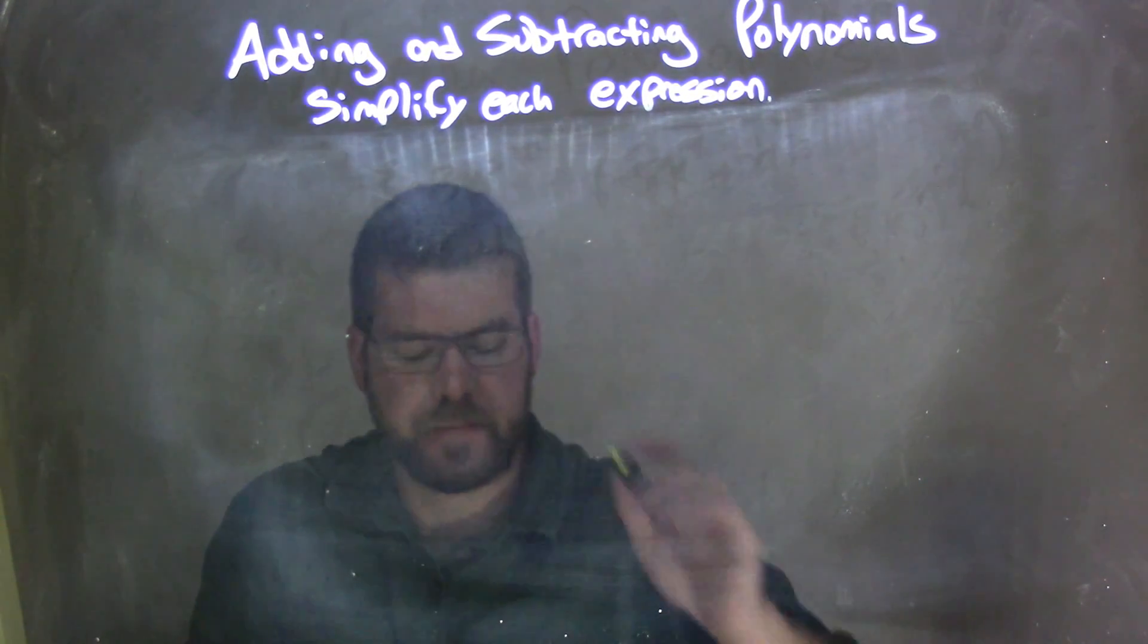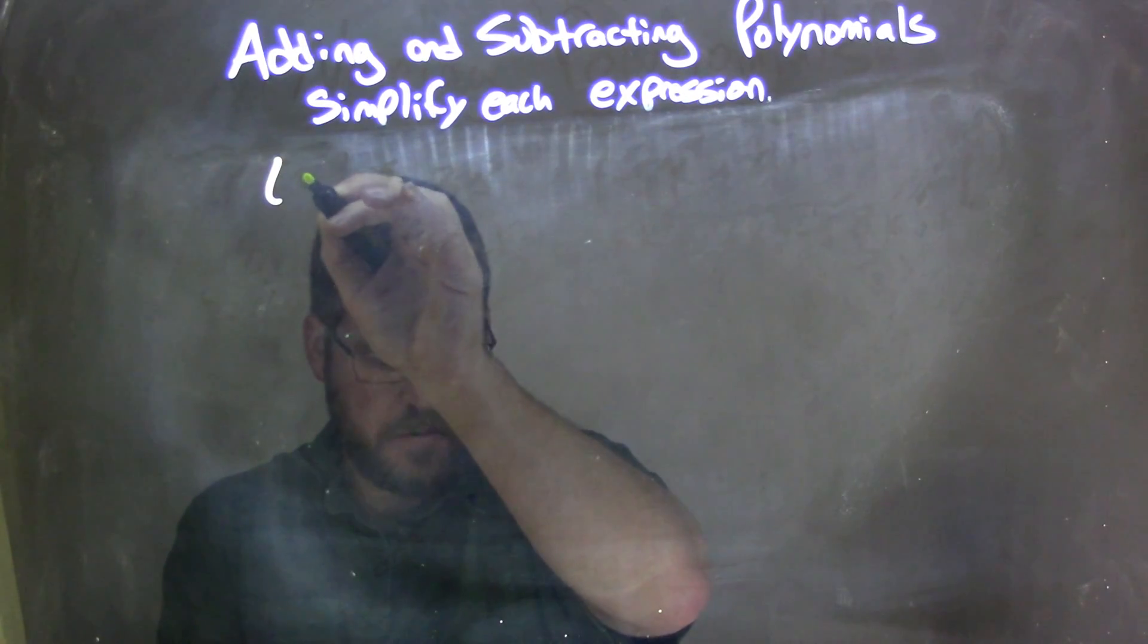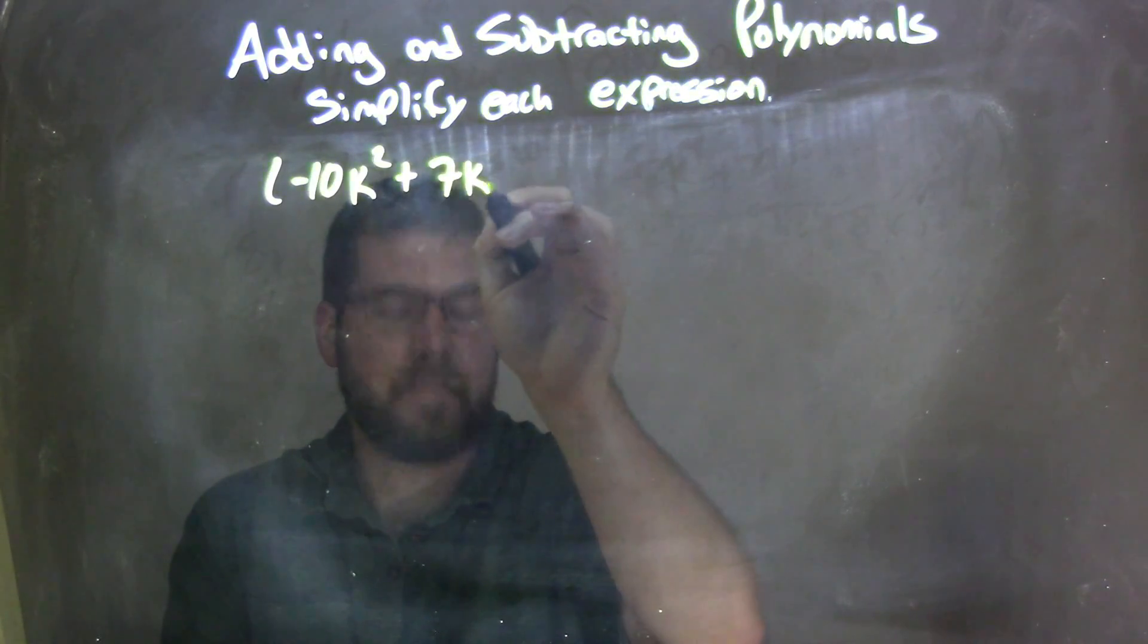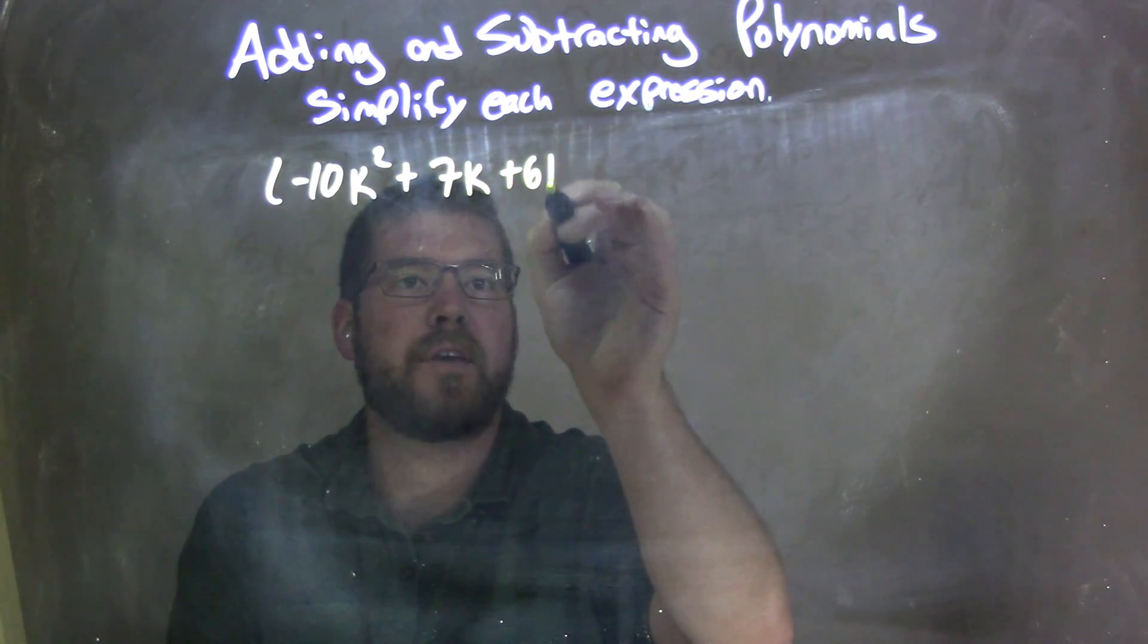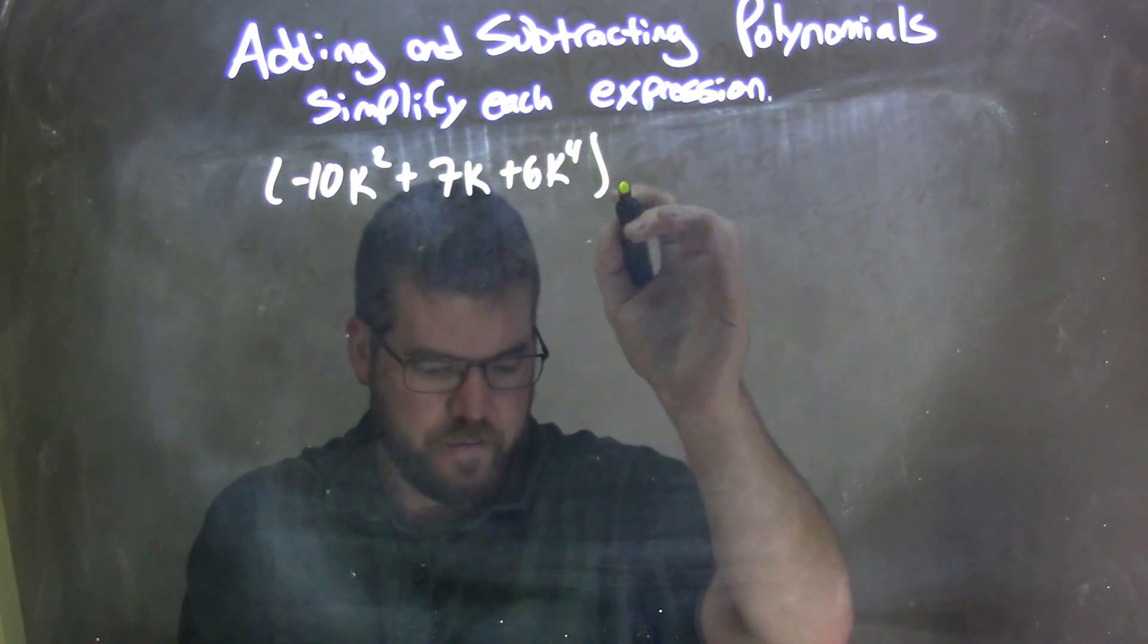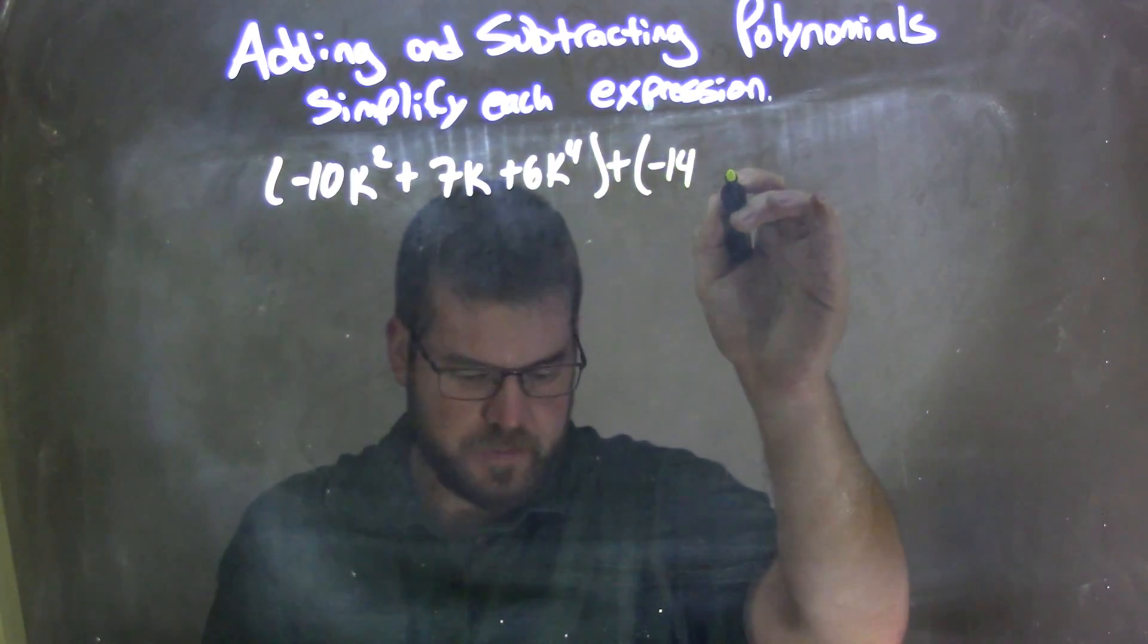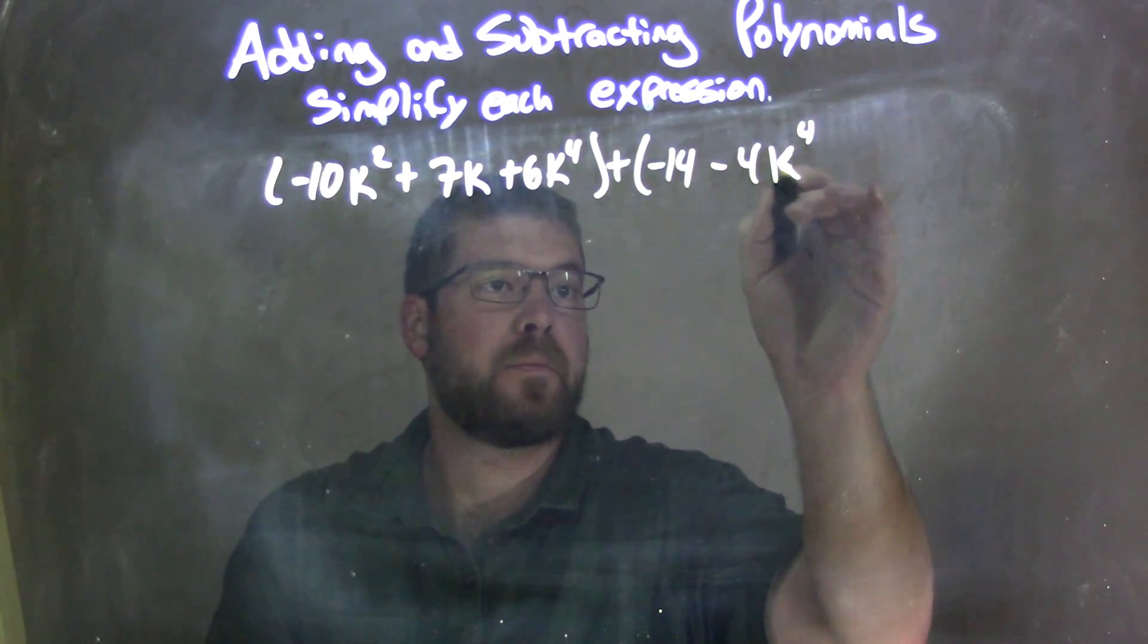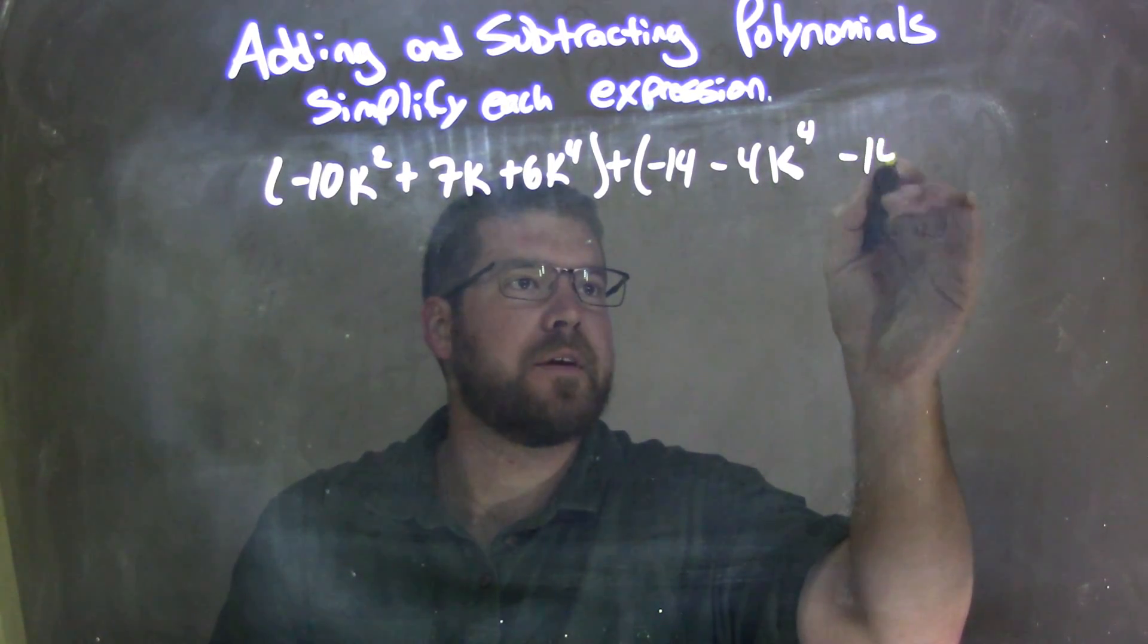So if I was given this expression: negative 10k squared plus 7k plus 6k to the fourth plus negative 14 minus 4k to the fourth minus 14k.